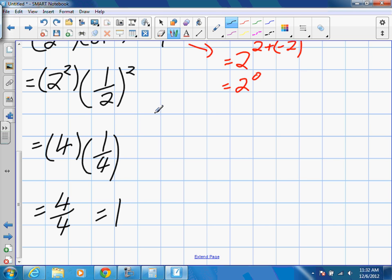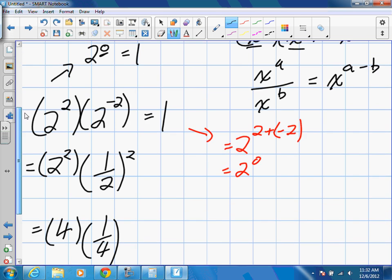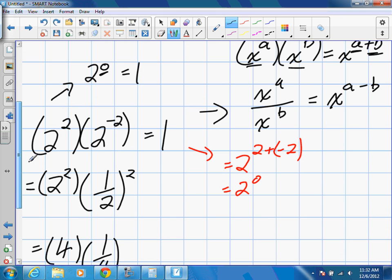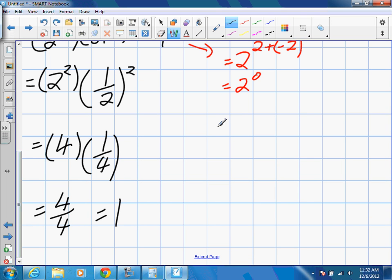The same idea would have been true if we'd used that division rule, okay? Let's say we use two values, 2 to the power of 2 divided by 2 to the power of 2. We know that that would give us 2 to the power of 2 minus 2, which would give us 2 to the power of zero.